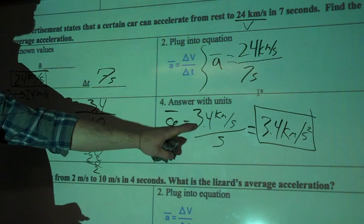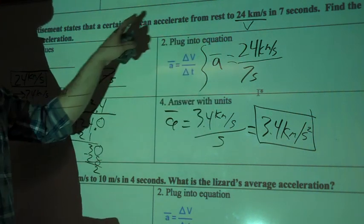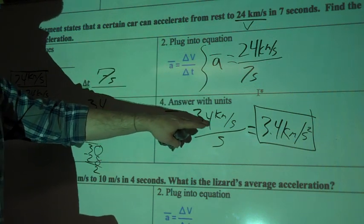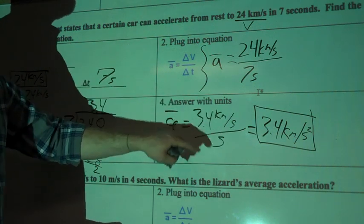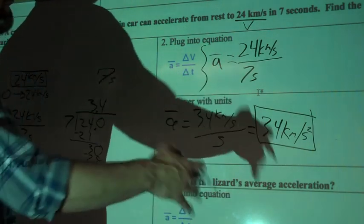Great, and that's just saying that every second that goes by, this car can accelerate by 3.4 kilometers per second. So for each second that goes by in those 7 seconds, it's going 3.4 kilometers faster.